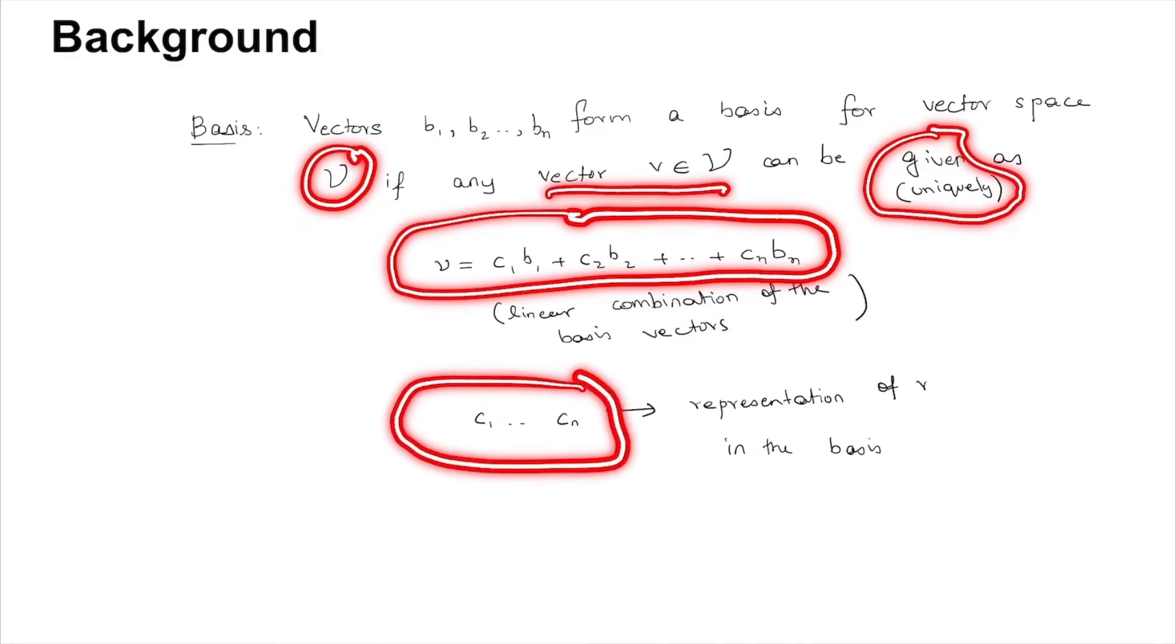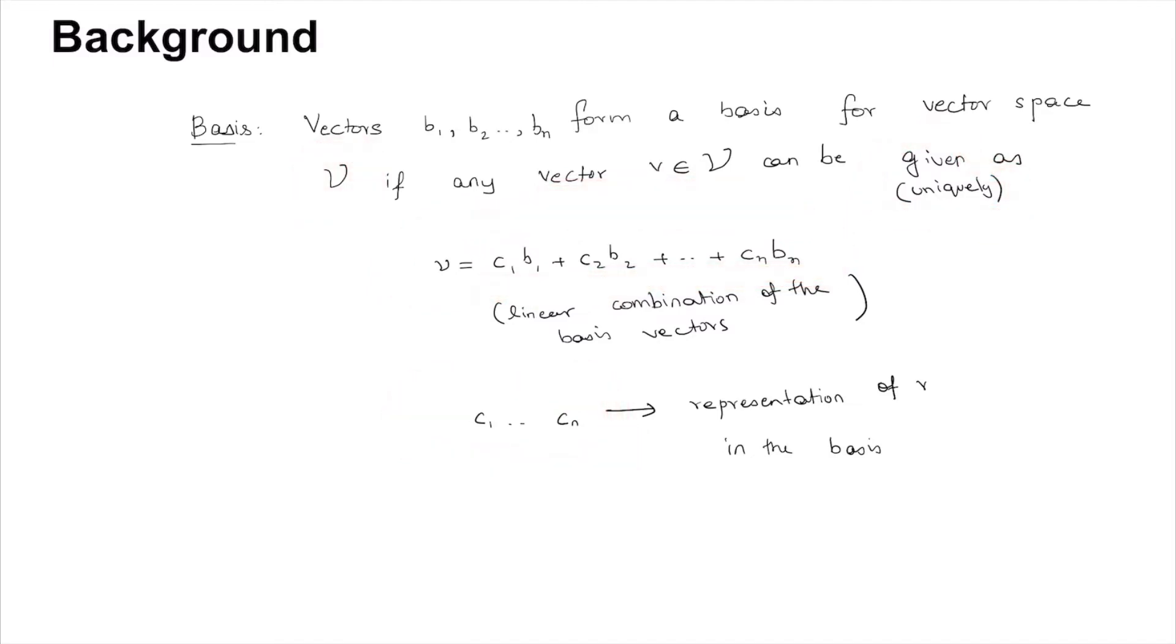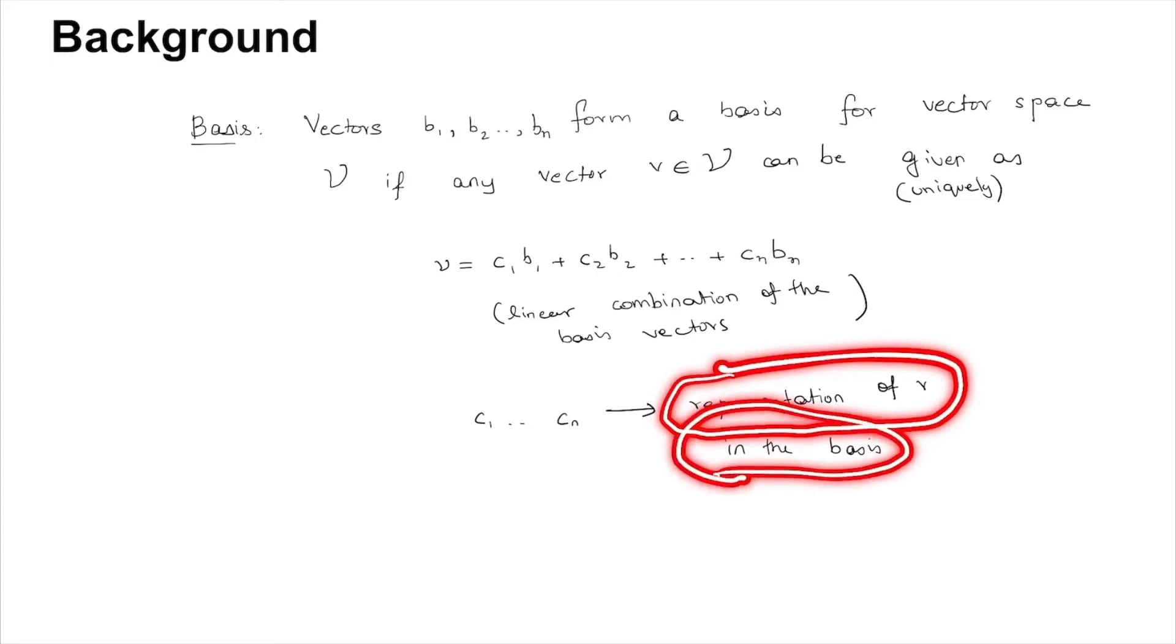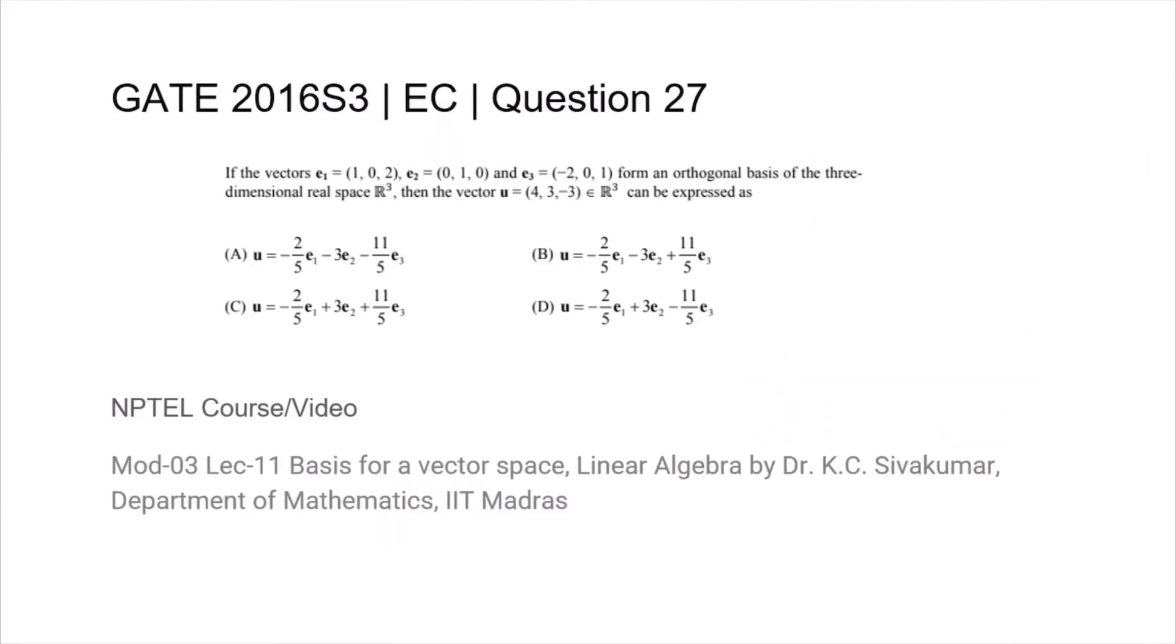And the constants, that is c1 to cn, in this linear combination are what is known as the representation of this vector in the basis. That's what the question is asking us.